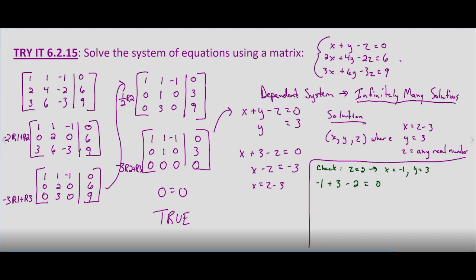Negative one plus three is two, minus two equals zero — it checks. Our second equation: two times negative one, plus four times three, minus two times two — does that equal six? This gives us negative two plus twelve, minus four. Negative two plus twelve equals ten, minus four equals six — that checks as well.